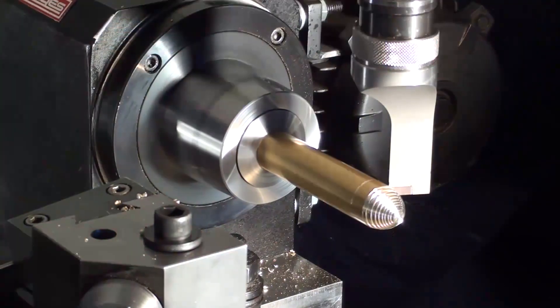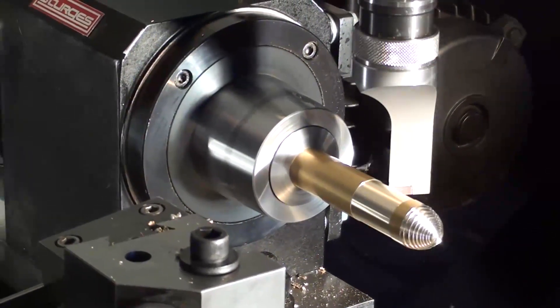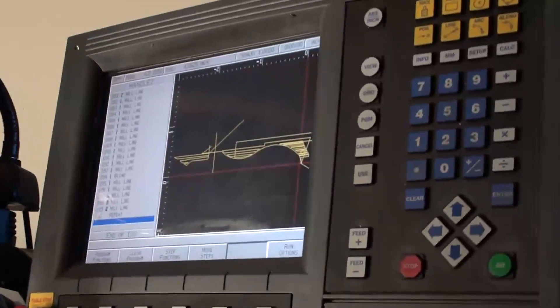A manual lathe is slow and requires a skilled operator. With the turning head system, you have the CNC program set up, so it is fast and exact. It's more efficient because it's automated.